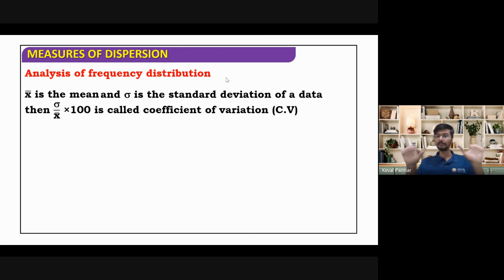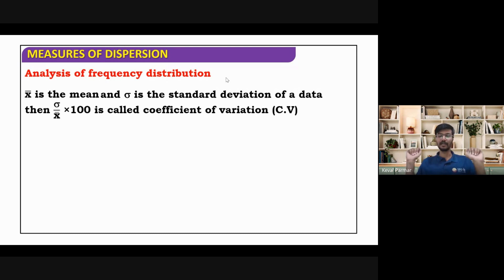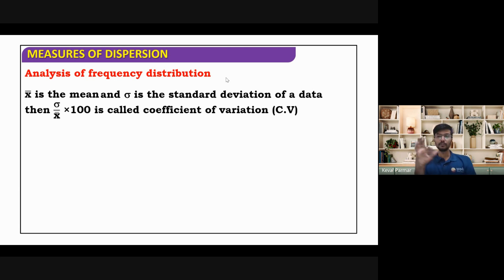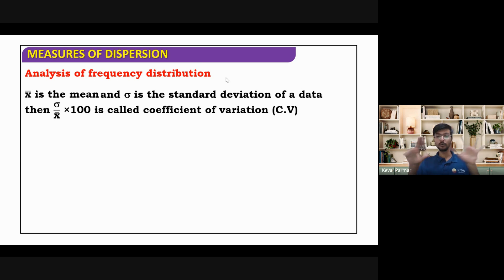Comparing datasets is what we do using the coefficient of variation, which is what we are studying in the analysis of frequency distribution. We have two datasets of marks and we want to compare them. The coefficient of variation formula is: CV equals sigma divided by x-bar, multiplied by 100. It is expressed as a percentage.